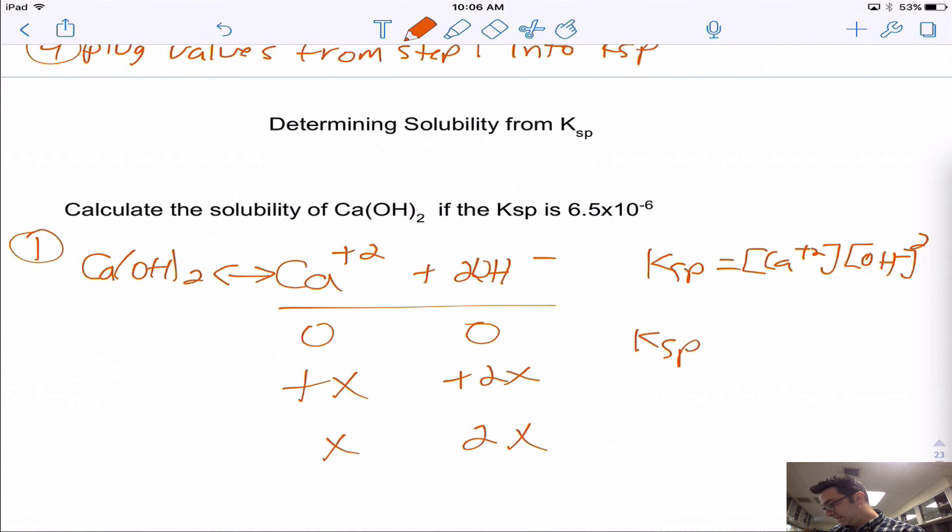We'll have KSP equals X times 2X squared. The KSP we know is 6.5 times 10 to the negative 6, equals 4X cubed. That came from the 2X being squared times another X gave us 4X cubed. We can now solve for this. If we go ahead and we solve for this, we would have our 6.5 times 10 to the negative 5th divided by 4.